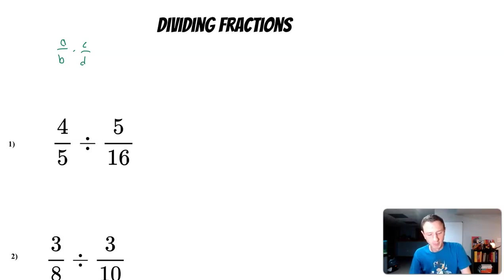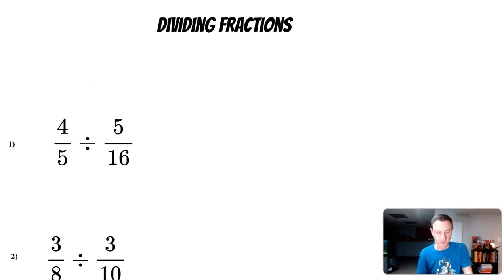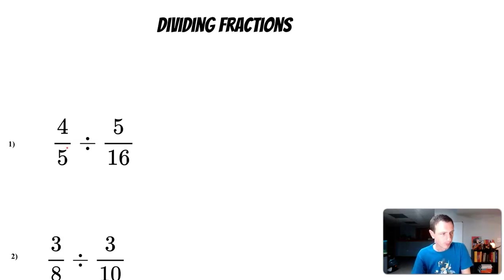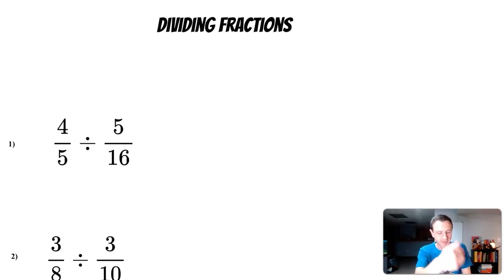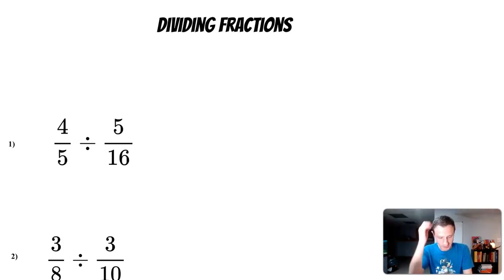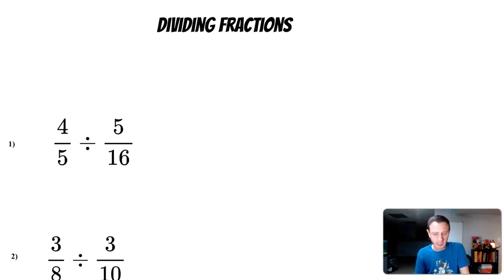When we're dividing, we don't have the same steps. Like if I'm just looking at this first problem — four fifths divided by five over sixteen — I'm not just doing four divided by five and five divided by sixteen. That's not how it works. So let's think about just the concept of dividing.